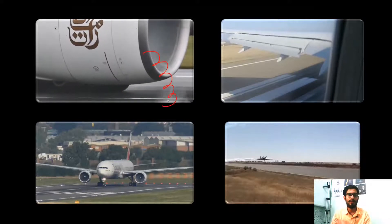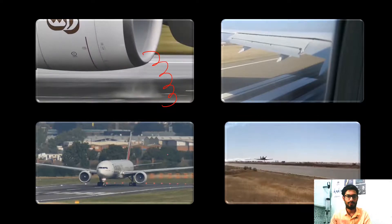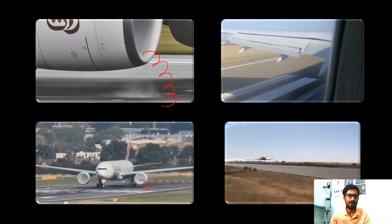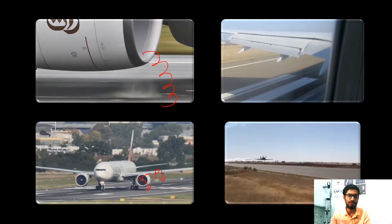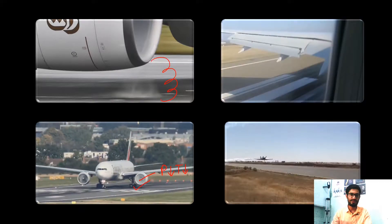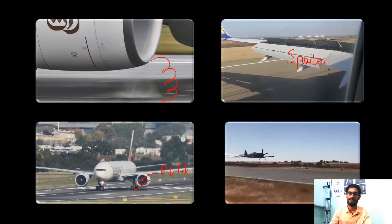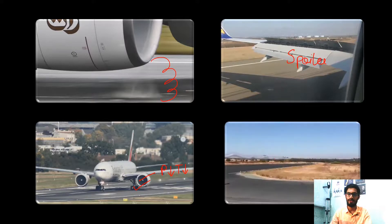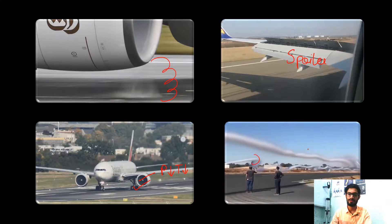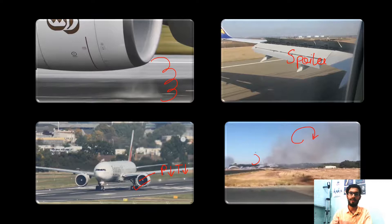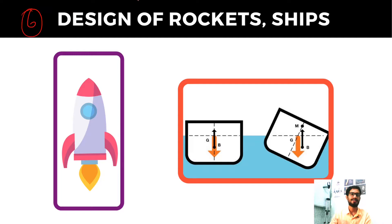Here we can see vortices forming and coming out of an aircraft engine. In one video, condensation occurs because the pressure drops very low at the center due to the rotating compressor blades, and temperature also drops below the dew point. In another video you can see spoilers coming into action, and vortices forming through the wingtip as discussed. The spoilers are regulating the airflow in such a way that the airplane decelerates.